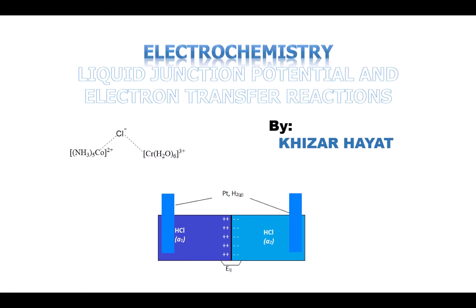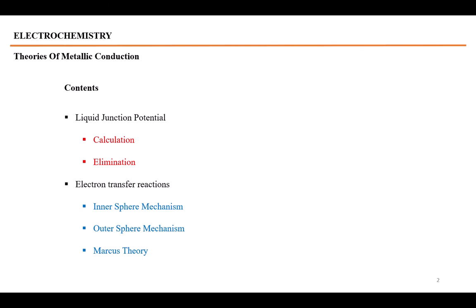Assalamu Alaikum students. Today's lecture is about liquid junction potential and electron transfer reactions. It is another lecture of electrochemistry for BSc sixth semester, master's physical chemistry. We will discuss the liquid junction potential, its calculation, its elimination, and then electron transfer reactions — including inner sphere mechanism, outer sphere mechanism, and Marcus theory to explain the outer sphere mechanism.